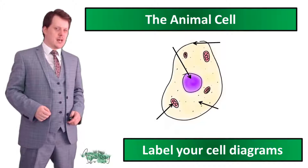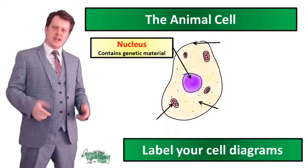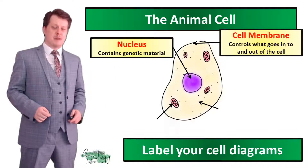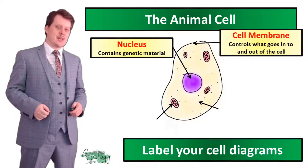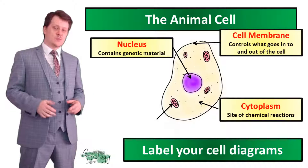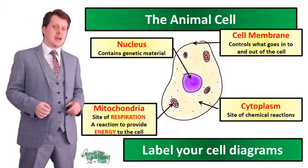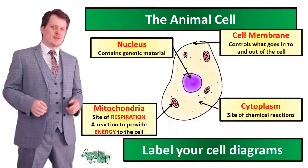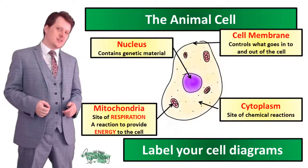Let's look at the animal cell. Our animal cell has a nucleus which contains its genetic material, a cell membrane which controls what goes into and out of the cell, cytoplasm which is the site of many chemical reactions, and mitochondria which is the site of respiration — a reaction which provides energy to the cell.